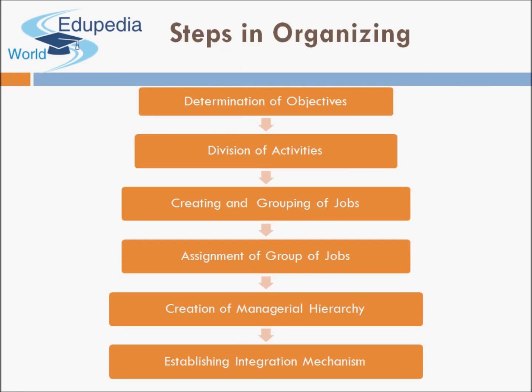The steps in organizing include: determination of objectives, division of activities, creating and grouping of jobs, assignment of jobs, creation of managerial hierarchy, and establishing an integration mechanism. First, the objectives of the organization must be clear. Once objectives are clear, you can identify the activities and functions that need to be carried out, and then categorize them into different departments.